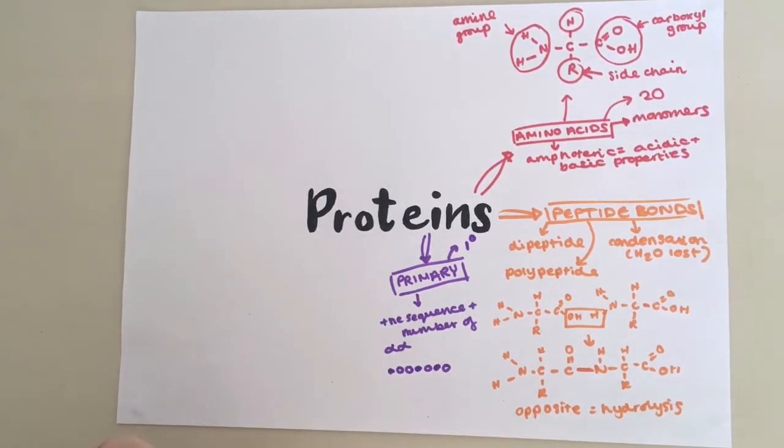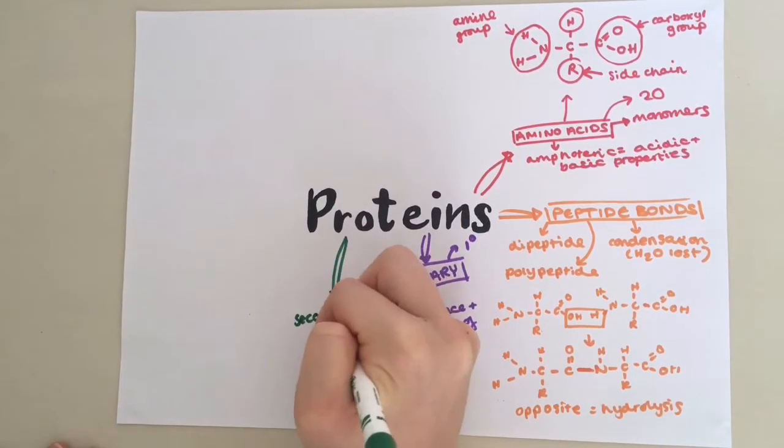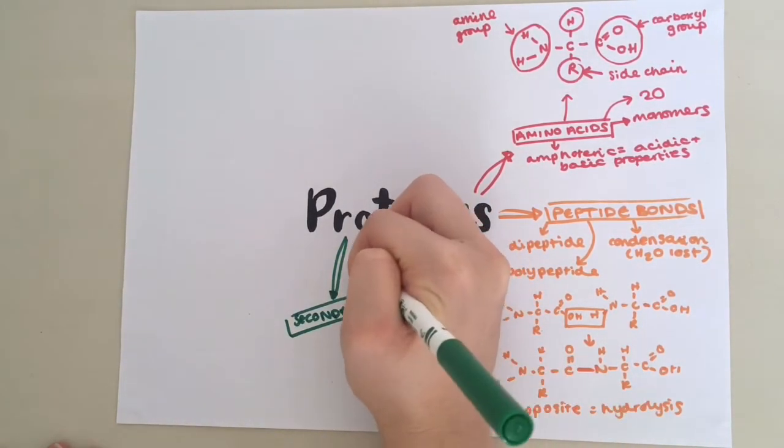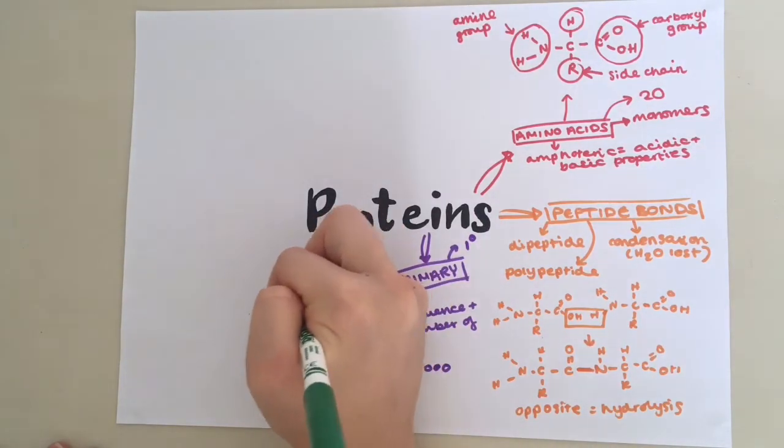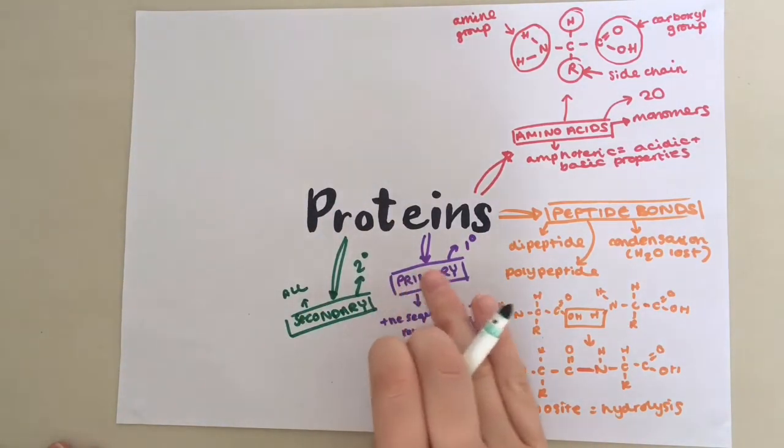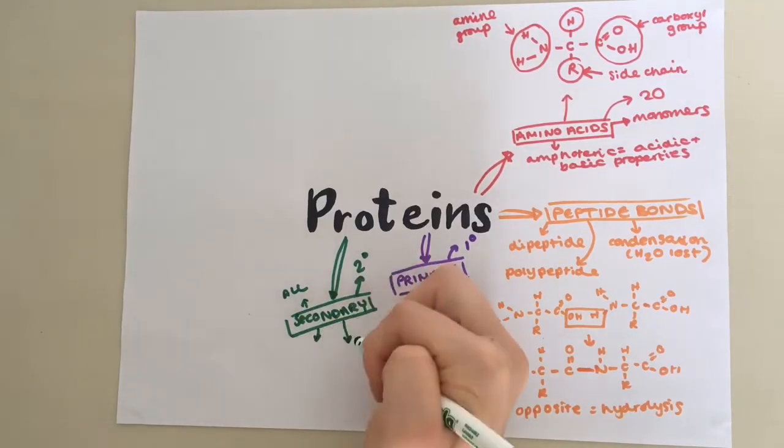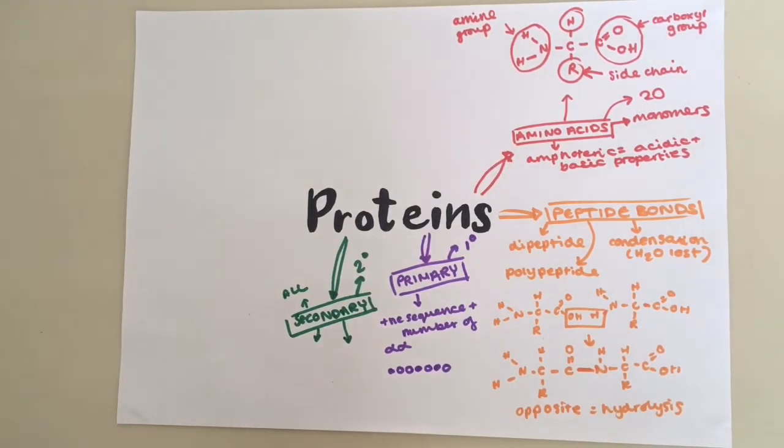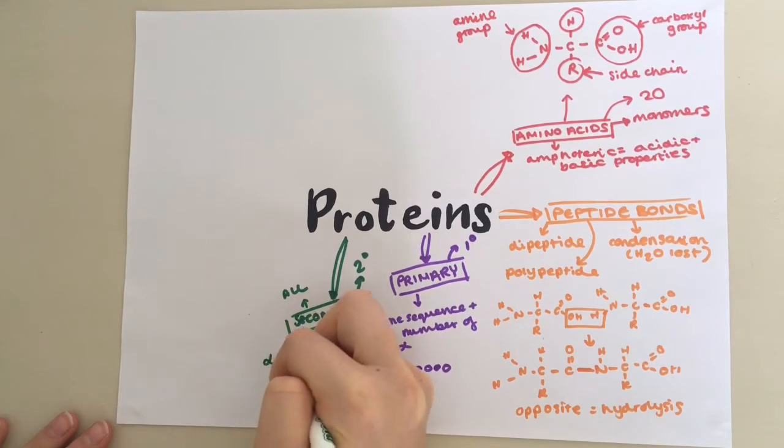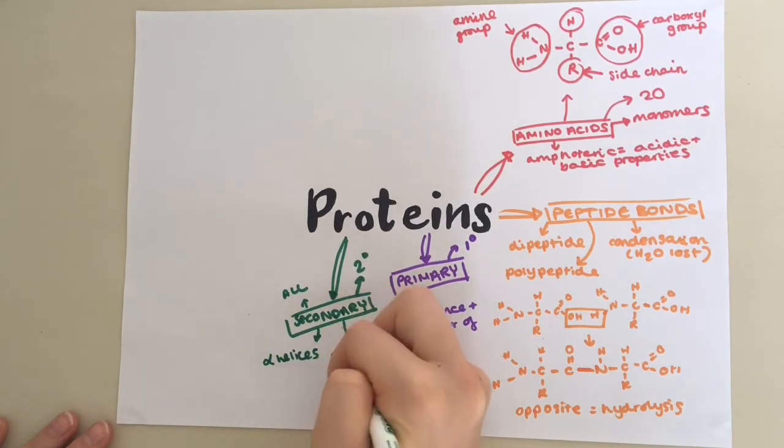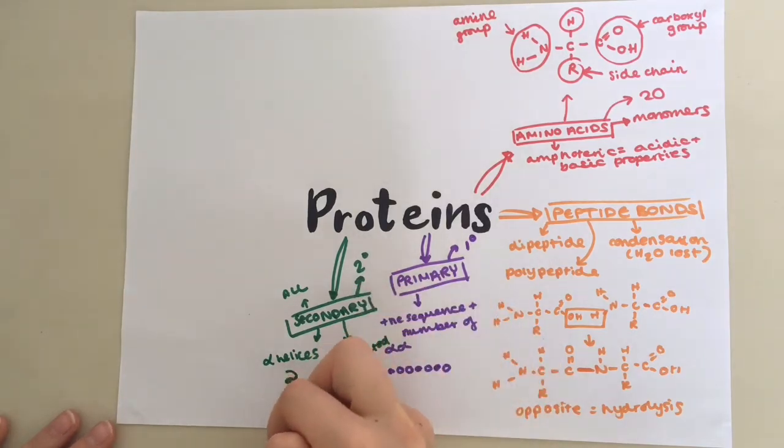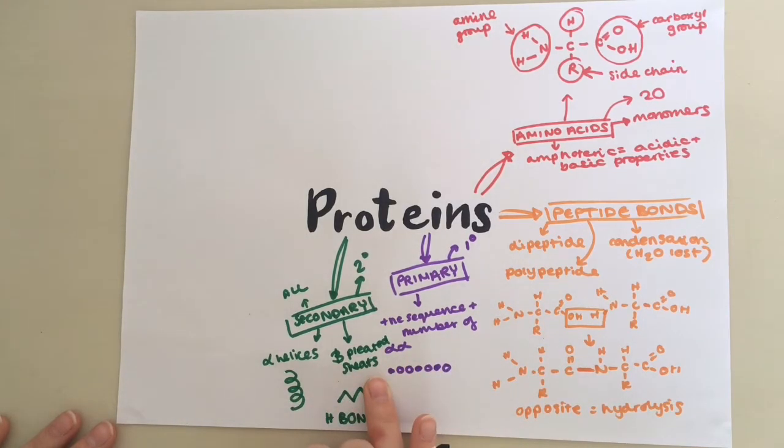Now we will look at secondary structure. You may see it written as this. All proteins will have secondary structure like all proteins will have primary structure. Secondary structure is basically where the chains fold into two different regular shapes, known as alpha helices and beta pleated sheets. Hydrogen bonds hold these structures in place. Alpha helices are more common than beta pleated sheets. But proteins can have both of these within their chain.